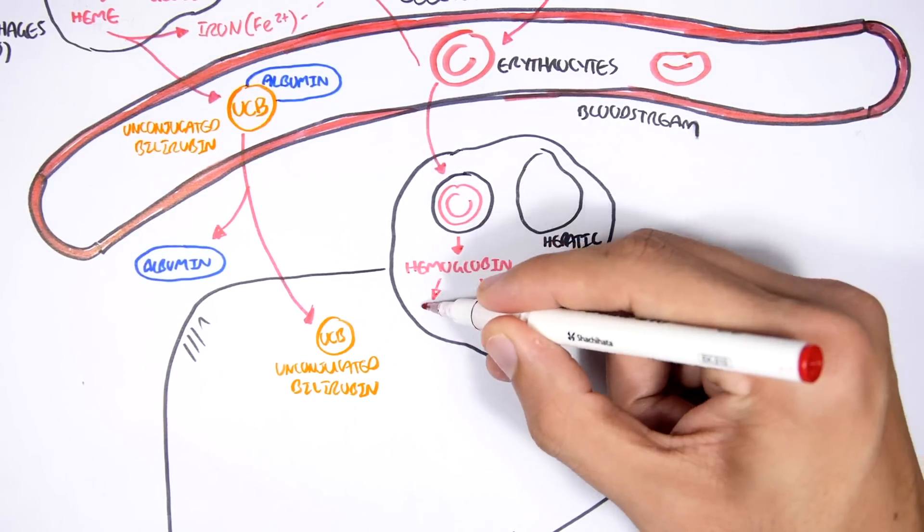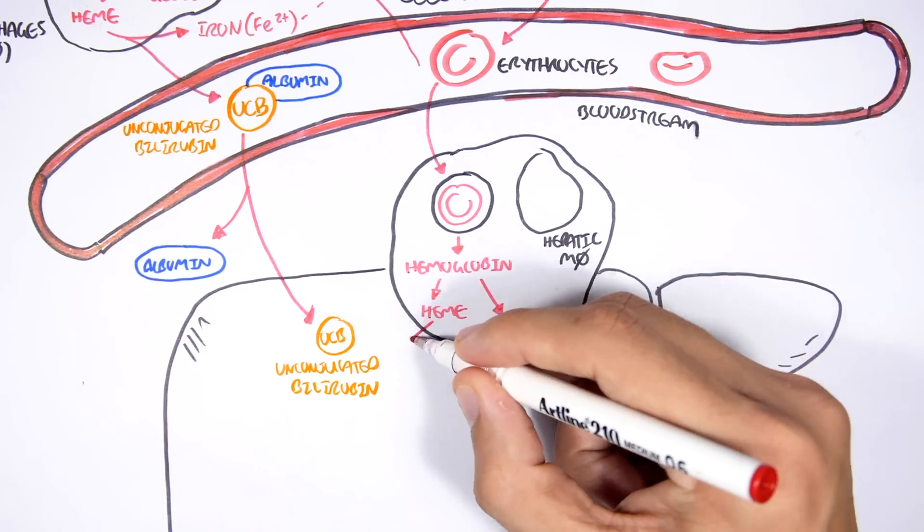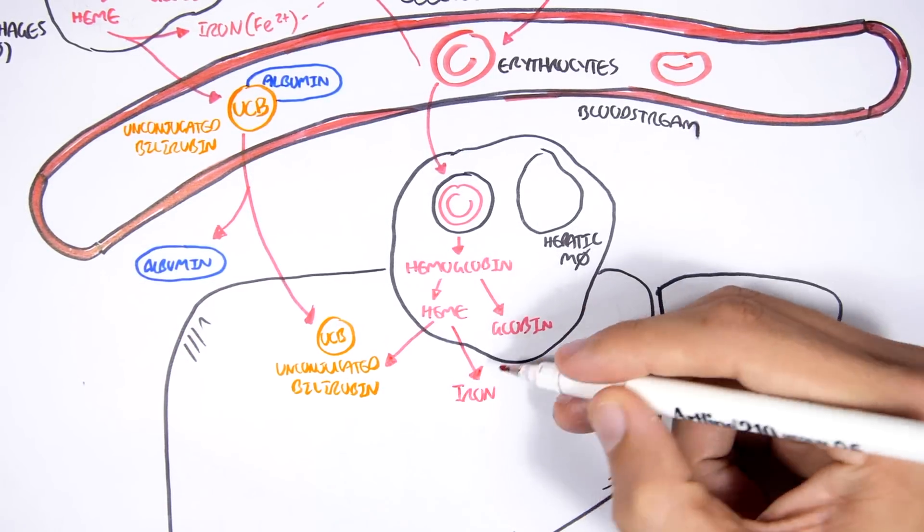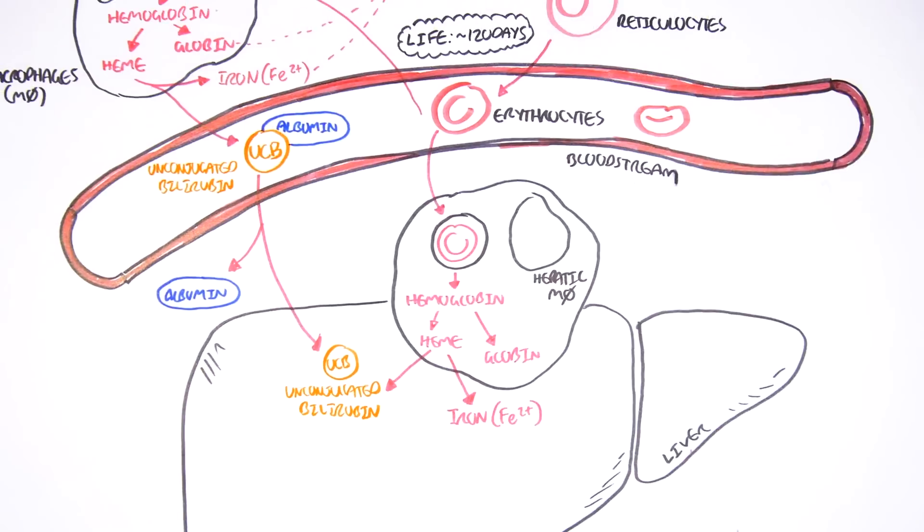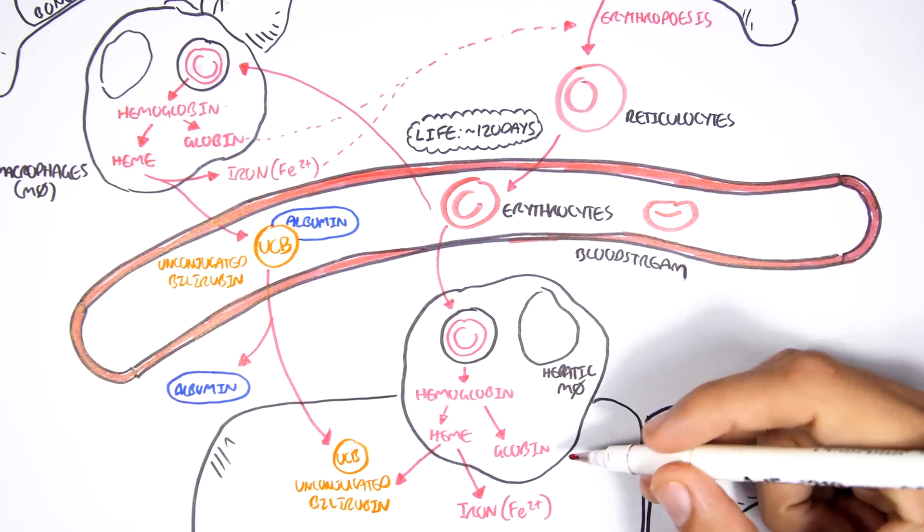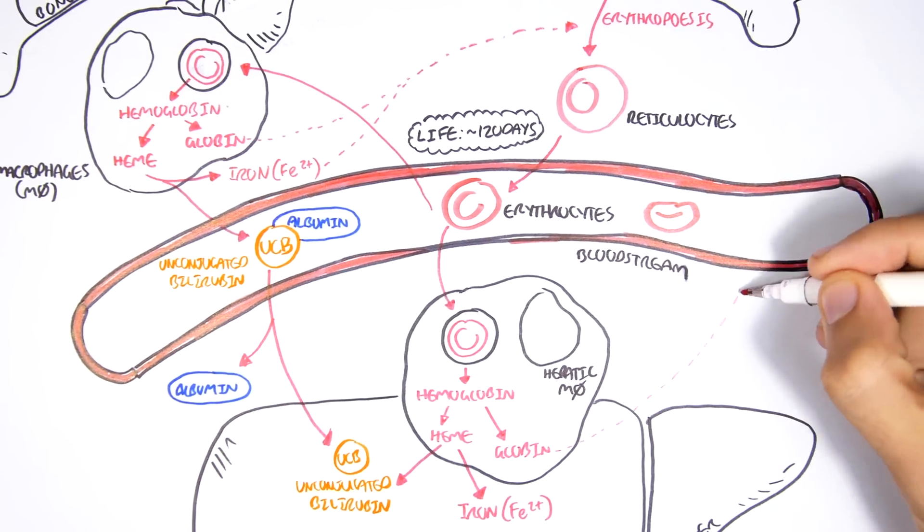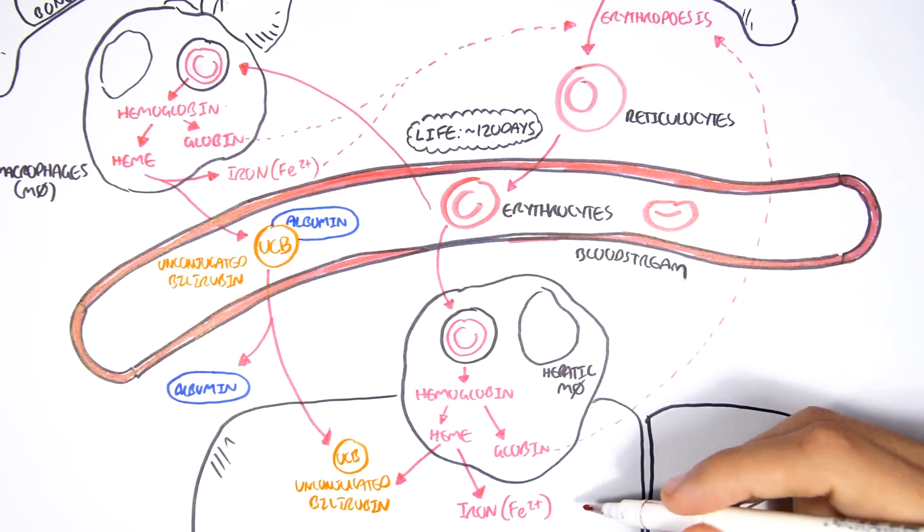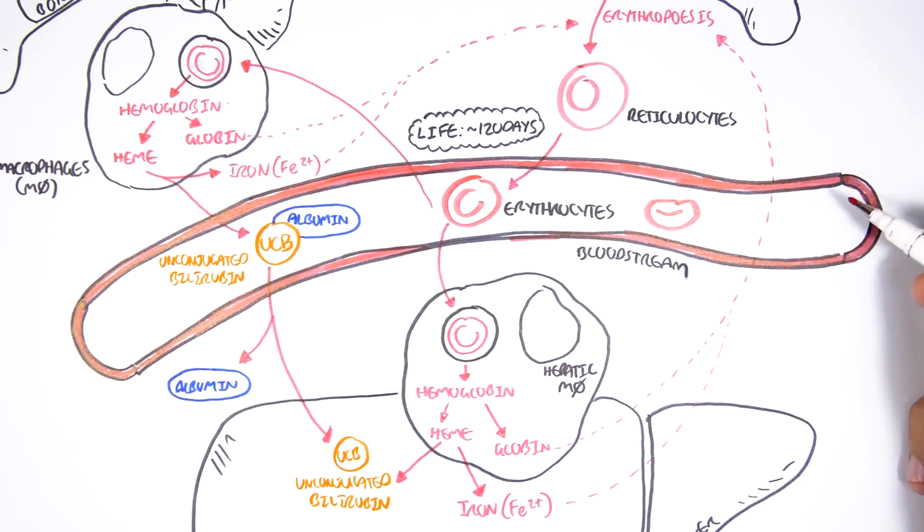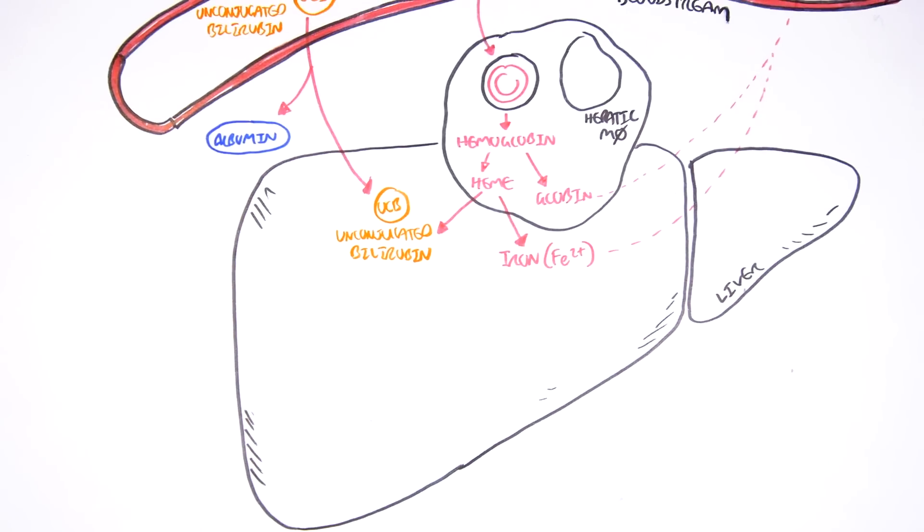The globin will be reused for erythropoiesis and the heme will be broken down to iron and unconjugated bilirubin. The iron is reused for erythropoiesis, whereas the unconjugated bilirubin will be further metabolized in the liver.